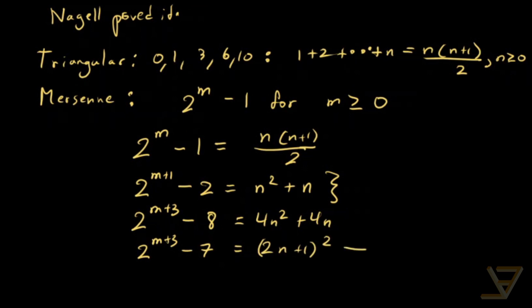And this is exactly in the form of the Ramanujan-Nagel equation, which recall is that 2 to the y minus 7 is equal to x squared.